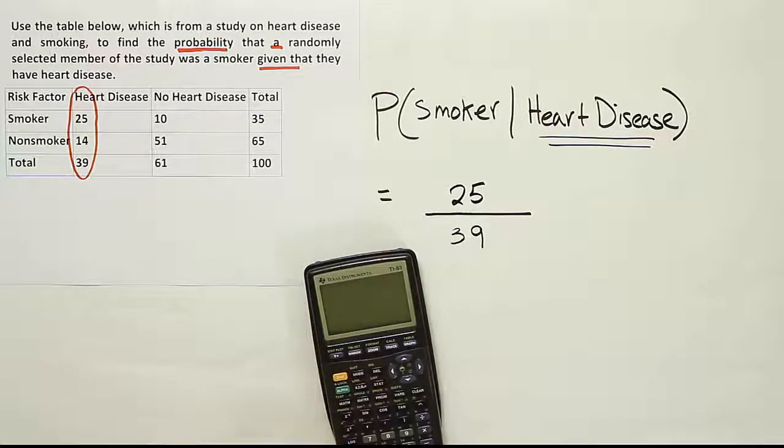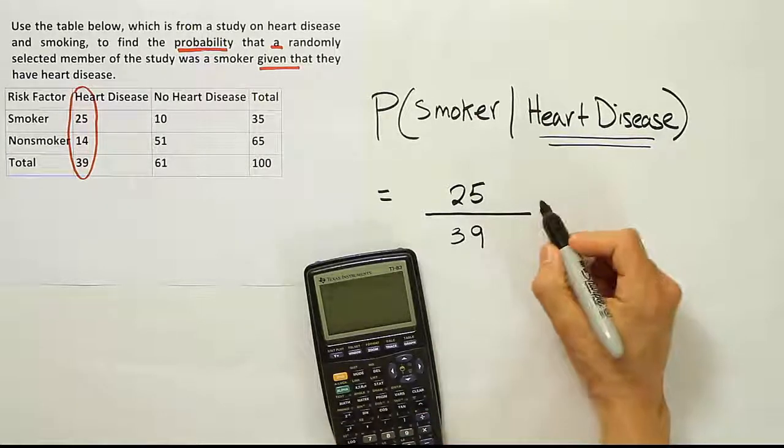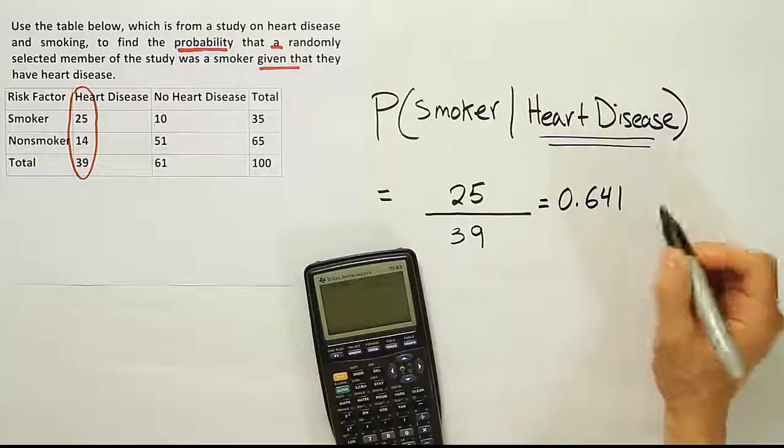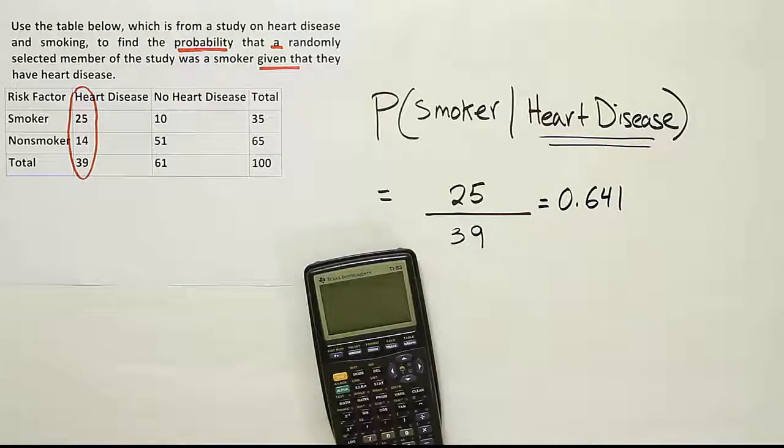So let's see what that works out to be. 25 divided by 39. We end up with the answer 0.641 or 64.1 percent.